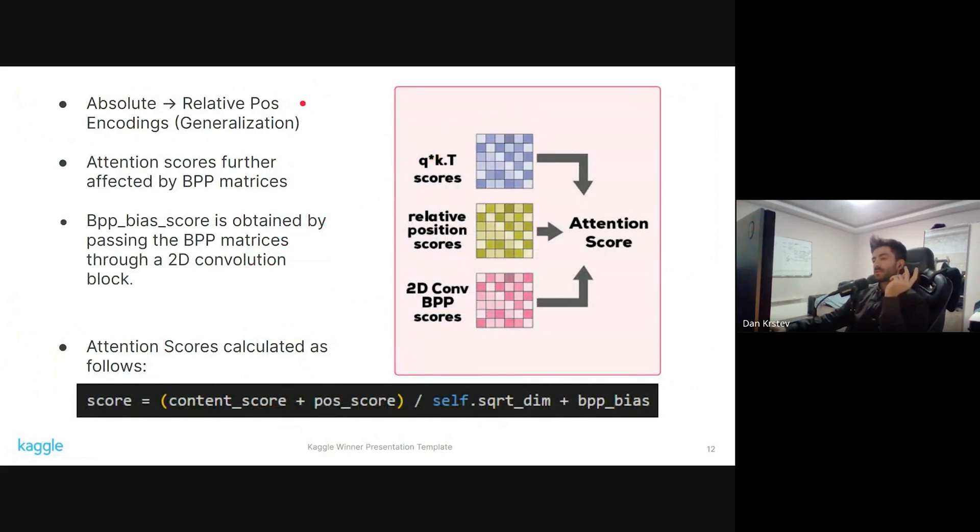The way the attention scores are calculated: early in the competition we saw that absolute encodings were not going to work since the length of the input sequences were 206 and the test set was 457, so there was no way that the model is going to generalize without seeing those positions. So I quickly changed to relative position. This did the trick; the models generalized pretty well after that. The attention scores are further affected by base pairing, base pair probability matrices. The way the score is calculated is the base pair probability matrix is run through a 2D convolutional block and it's added to the final score.